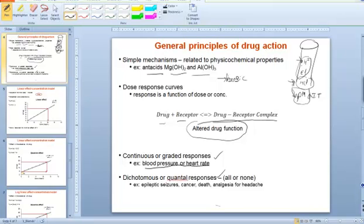Dichotomous response is another kind of response. Dichotomous - remember 'di' means two. Two branches - yes or no. It's called the yes or no response, or all or none response, or quantal response. The best example is headache - whether the person is having a headache or no headache.